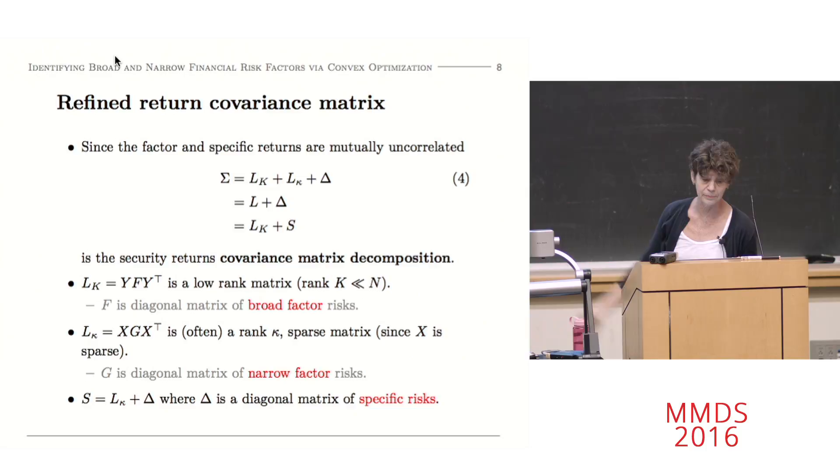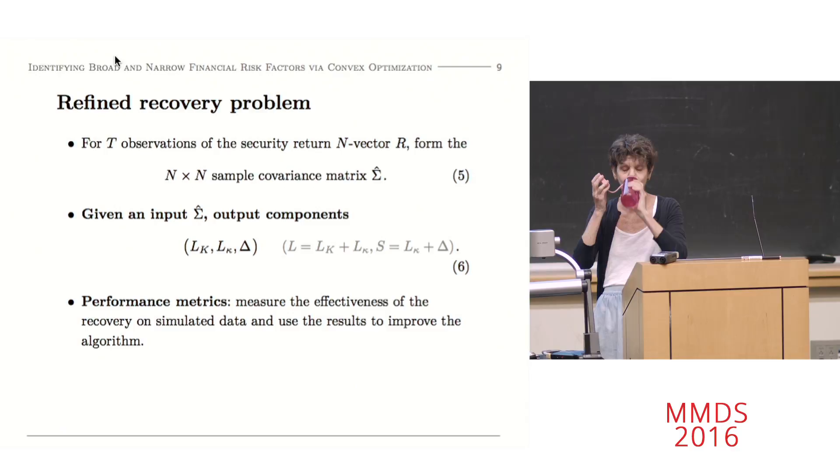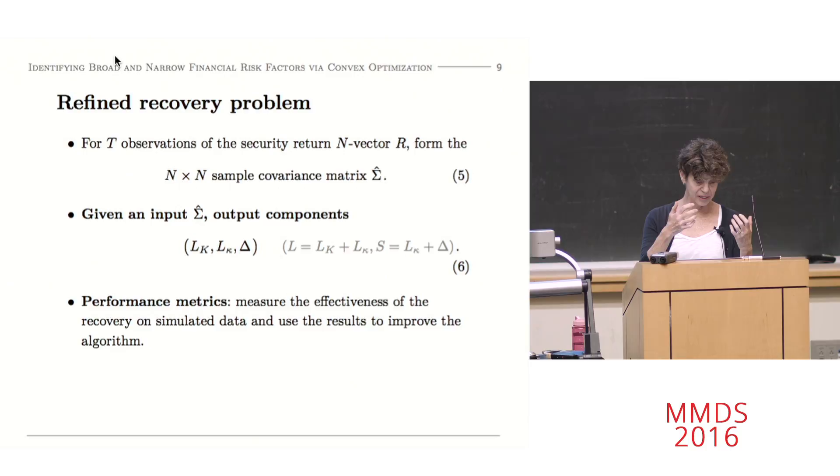So I've got a fancier return generating process. I get a fancier return covariance matrix. It's sigma. It's got three parts. It's got a broad component, L sub K. K is going to be the rank of that, number of broad factors. Kappa. L kappa is going to be the narrow factor component. Delta is definitely diagonal. That's what my investors want to know. They can diversify away. And we see we can group these like Ross's original, L plus delta.